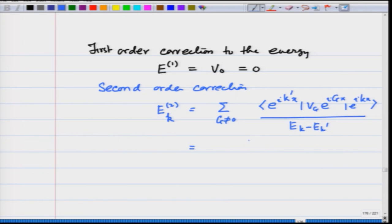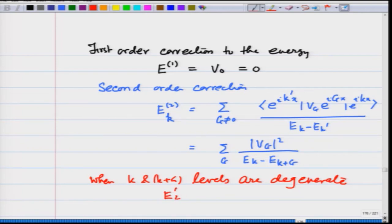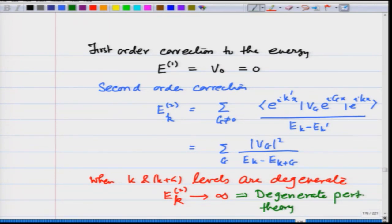This comes out to be equal to Σ_g |v_g|² / (E_k − E_{k+g}). This is all fine as long as k and k+g are not degenerate. When the k+g levels are degenerate, then E₂_k goes to infinity, our perturbation result does not hold anymore, and what we did then is we applied degenerate perturbation theory.